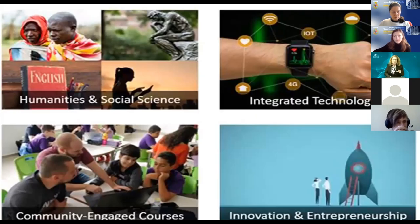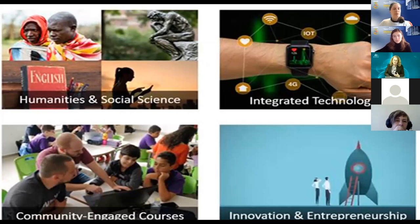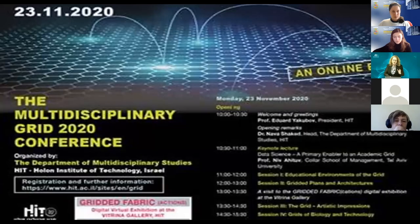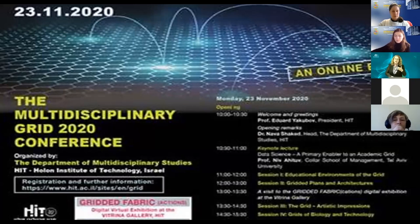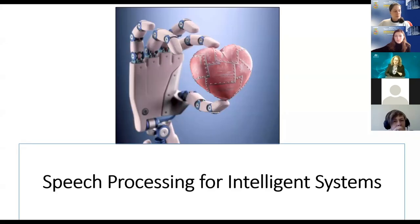The courses are divided into four clusters: humanities and social science, integrated technologies, innovation and entrepreneurship, and community-engaged courses — all multidisciplinary, with the target of creating a new language of working together, which is so important in industry today. Next week we have a conference called Multidisciplinary Green 2020, where academic researchers share their journey from one discipline to another. I invite you to register — Galina sent everyone the link.